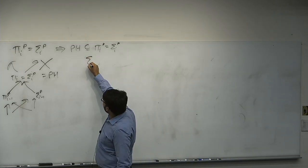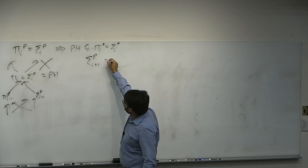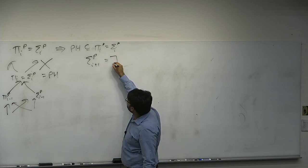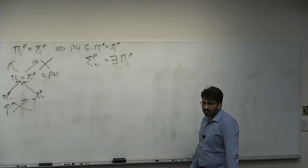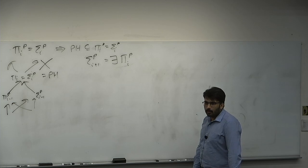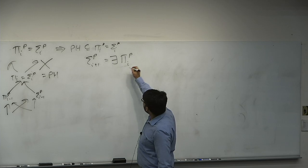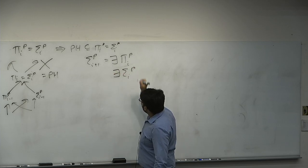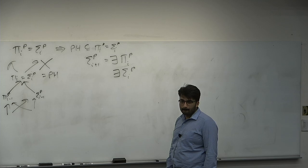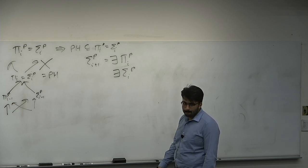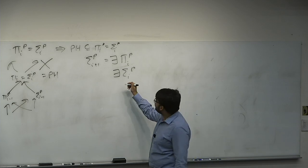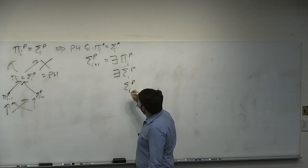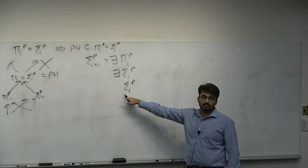Assume Pi-I equals Sigma-I. Consider Sigma-(I+1): it equals Exists-Pi-I-P. But Pi-I-P is just Sigma-I by assumption. So Sigma-(I+1) = Exists-Sigma-I-P. What is Exists-Sigma-I-P? It's Sigma-I-P, because an existential quantification over an existentially-beginning class combines and doesn't matter. So Sigma-(I+1)-P equals Sigma-I-P. QED: the next level collapses to the I-th level.